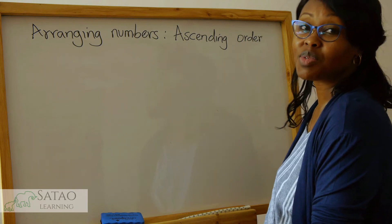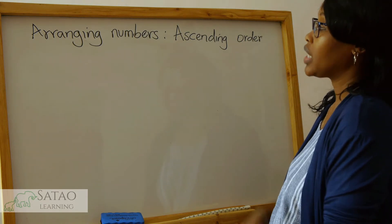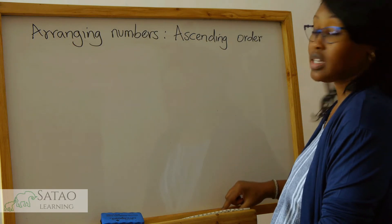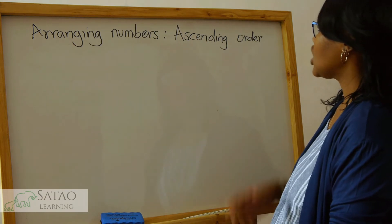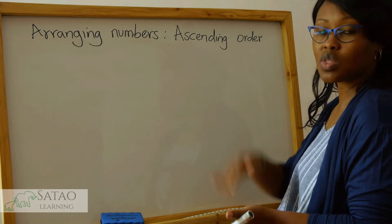Hello boys and girls, and welcome to Satao Learning. Today we are going to look at how we can arrange numbers in ascending order. Ascending order means that we arrange them from the smallest to the biggest.